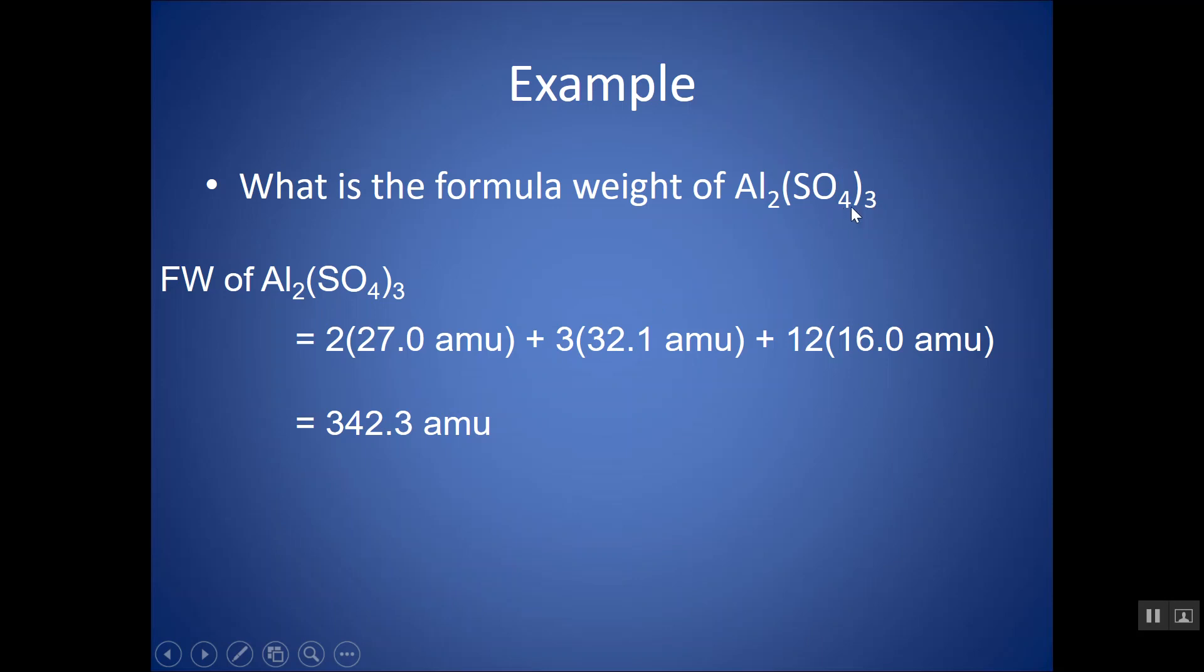Oxygen essentially has two subscripts. You multiply them together, four times three. There's 12 oxygens that each weigh 16 AMU. If I add this all up, I get that the formula weight is 342.3 atomic mass units. Remember, this is the mass of only one unit of aluminum sulfate. If I had more units, then it would weigh a lot more.